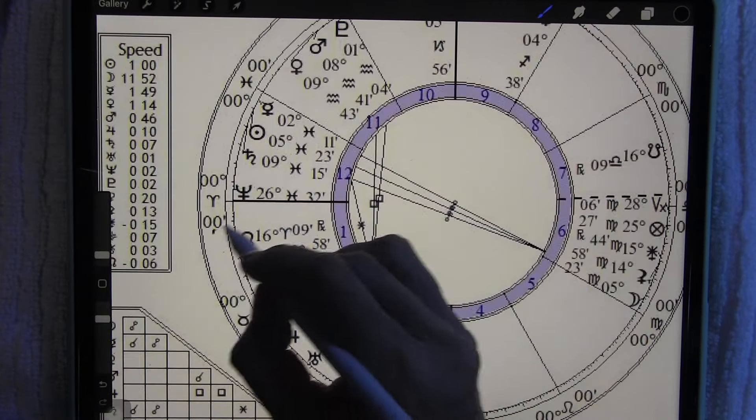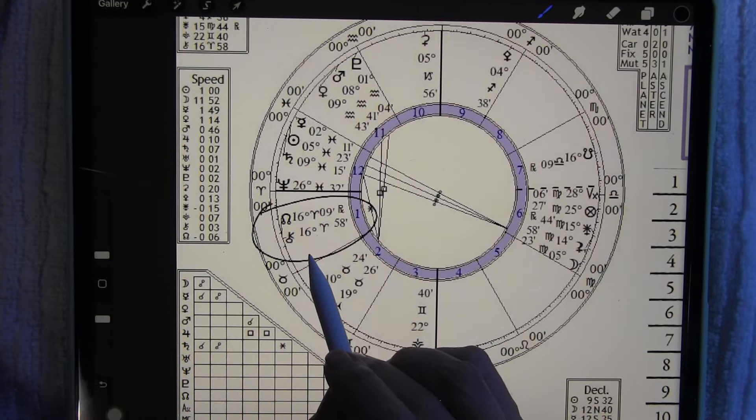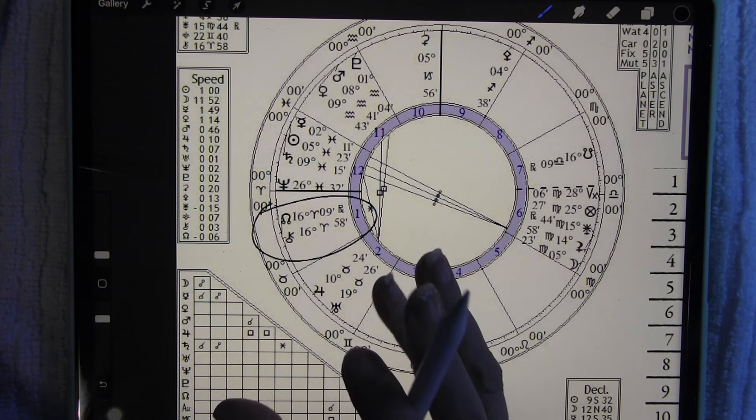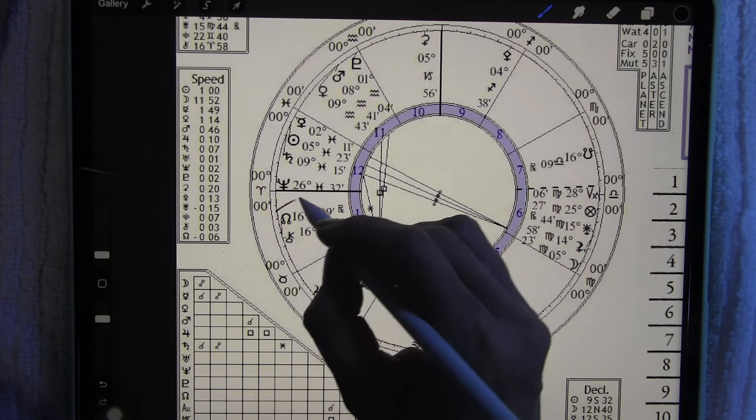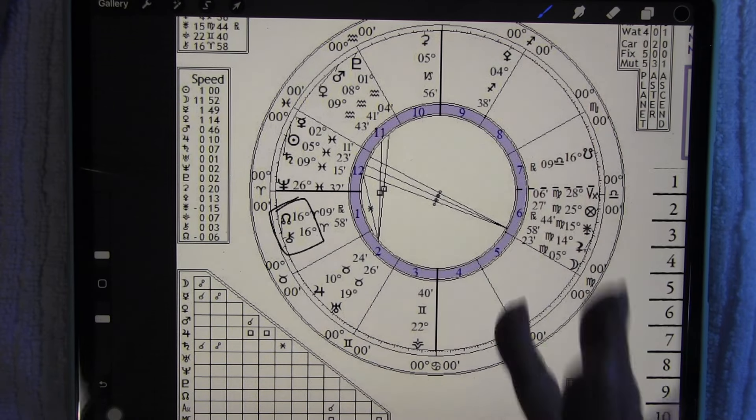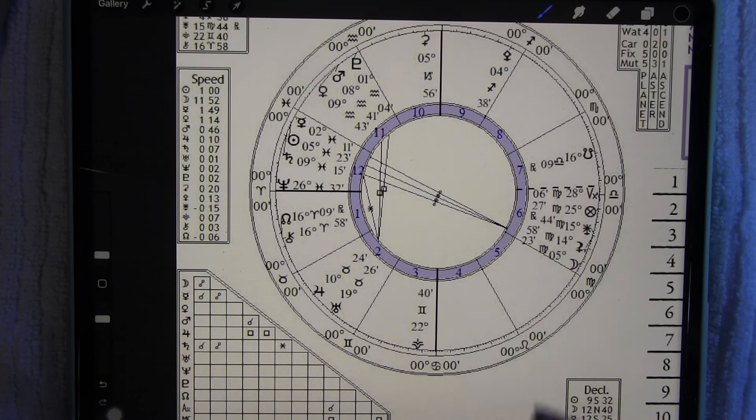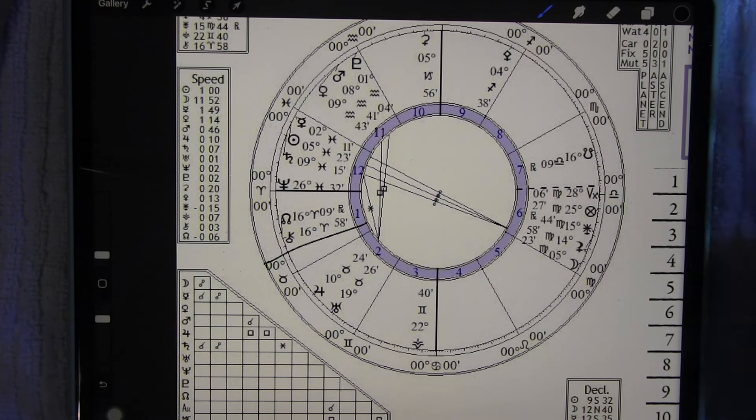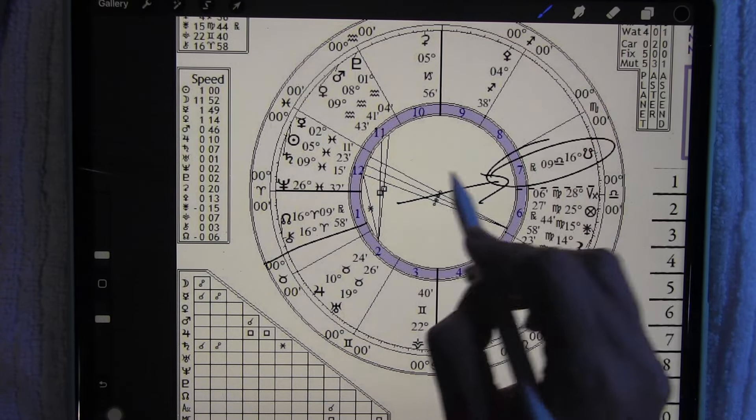We're in it now. We've got the Chiron conjunct the North Node, 16 degrees. We are in this time of healing. By healing ourselves in the Aries energy, because the Aries energy is always me, myself, and I. By going within and not pointing the finger outward to the partnership, the Libra, the South Node, the past.